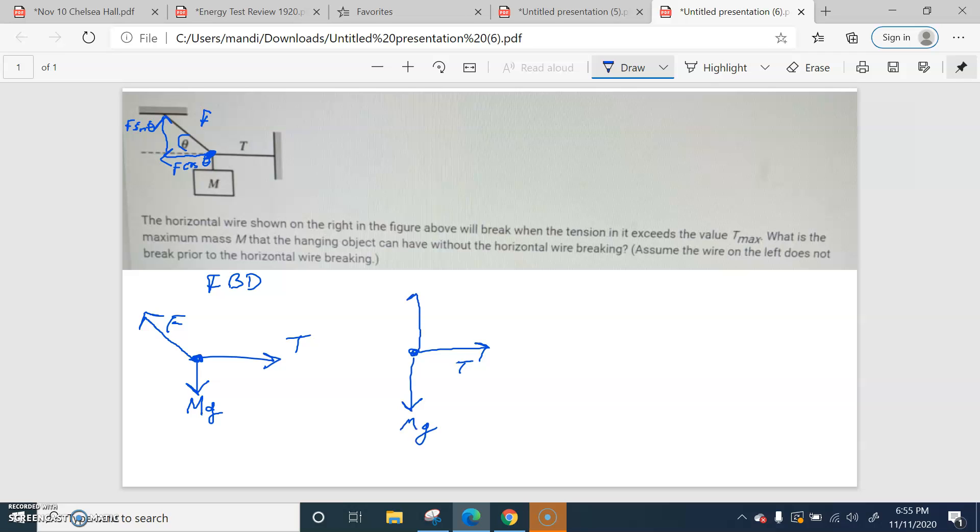So going up is F sine theta, and going over is F cosine theta.